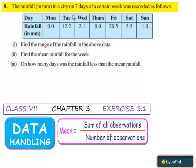Now question number 8. The rainfall in a city on 7 days of a certain week was recorded as follows. In the first part, find the range of the rainfall in the above data.